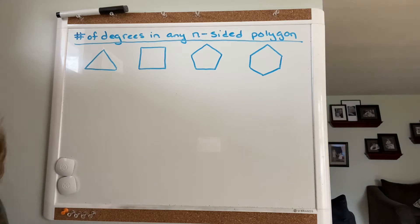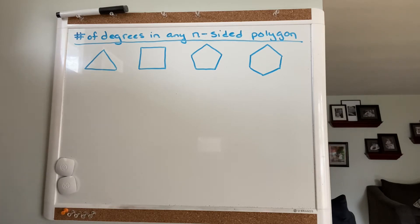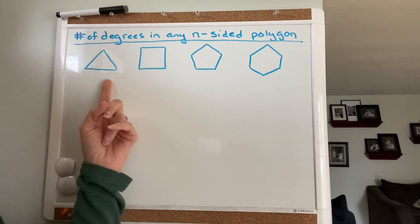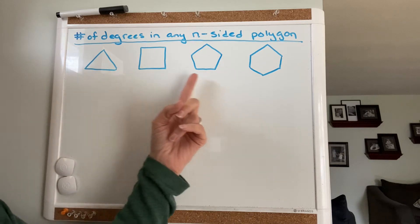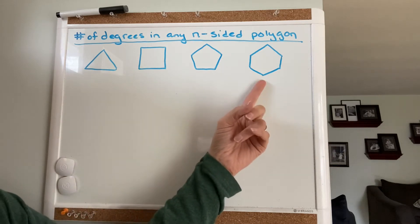The one thing that you do know, that I did teach you, is that there are 180 degrees in every single triangle that exists. So I have a triangle, a quadrilateral, a pentagon, a hexagon.